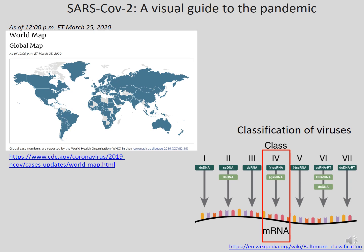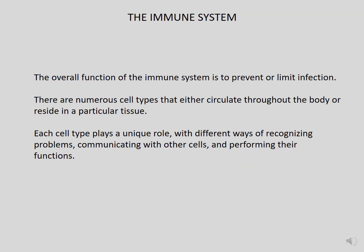Welcome back. In Lectures 1 and 2, I talked about the coronavirus pandemic, discussed how it spread in less than three months to most countries in the world, and also talked about viruses, how they can be classified based on the genetic material, and how they can be classified based on the diseases they cause. This is Lecture 3, and here I will discuss the immune system.